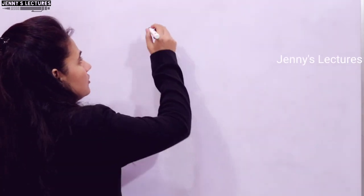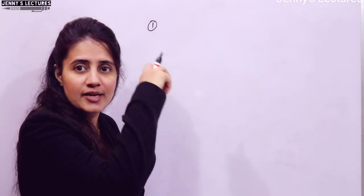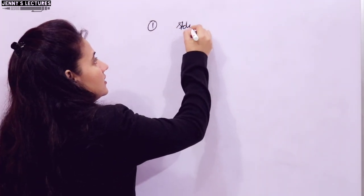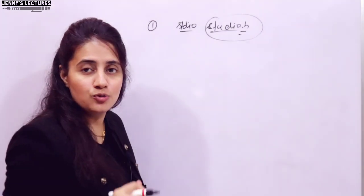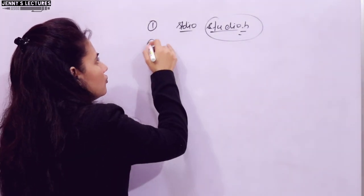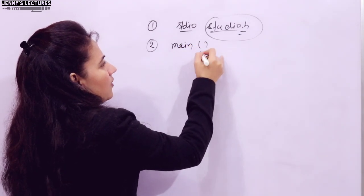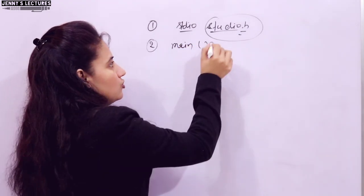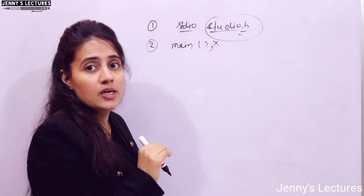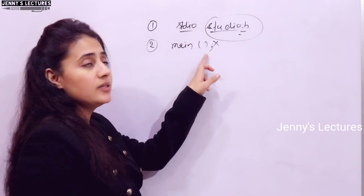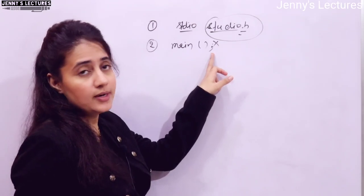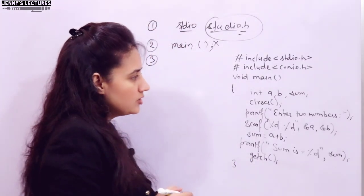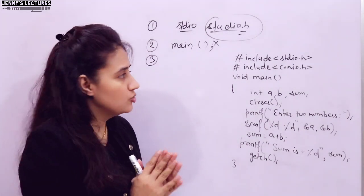The very first mistake beginners make is when writing header files — instead of writing 'stdio.h' they write 'studio.h'. This is the most common error. The second mistake is writing a semicolon after the main function declaration, which is not allowed. It will give an error: 'declaration terminated incorrectly'.